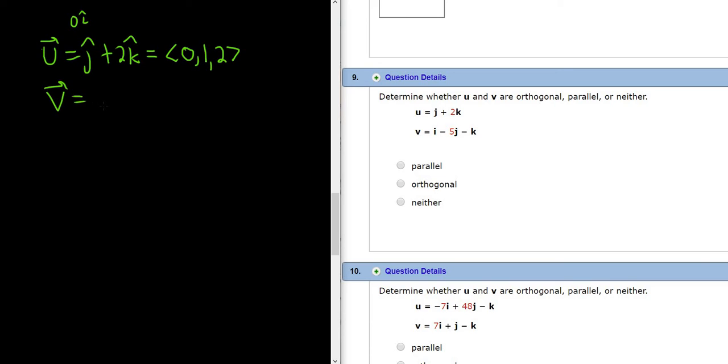And then v, in this case, let's just go ahead and translate it to component form. So it would be 1 times i hat, negative 5, and then negative 1, right? Just translating this i, j, k form to component form.